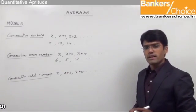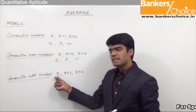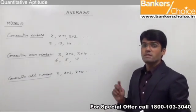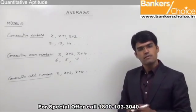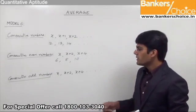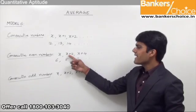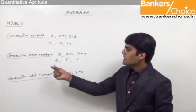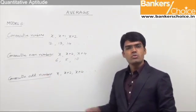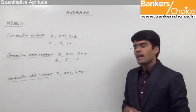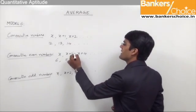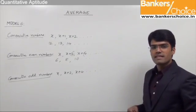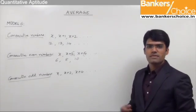Remember, most students have a misconception that consecutive odd numbers should be taken as x, x plus 1, x plus 3 and so on, which is absolutely wrong. Whether the numbers are consecutive odd or consecutive even, they should be represented as x, x plus 2, x plus 4 and so on. The idea is that between any two consecutive odd or any two consecutive even numbers the difference is 2, and that difference of 2 is reflected here — plus 2, plus 2, plus 2 and so on.